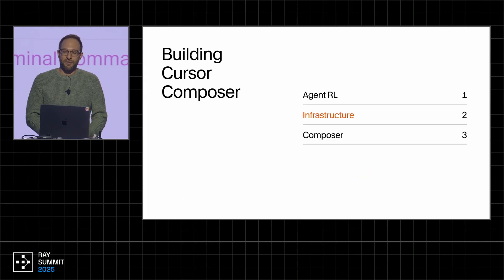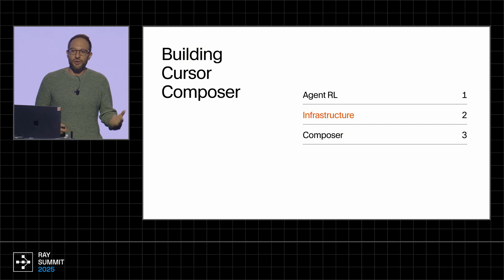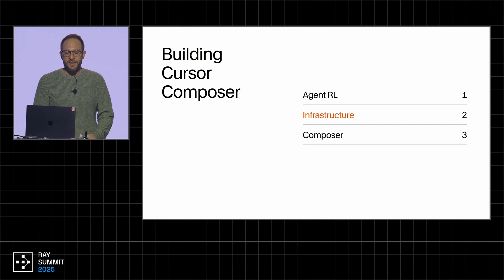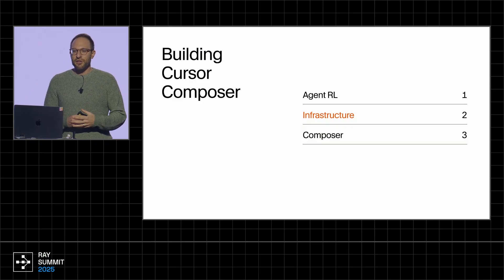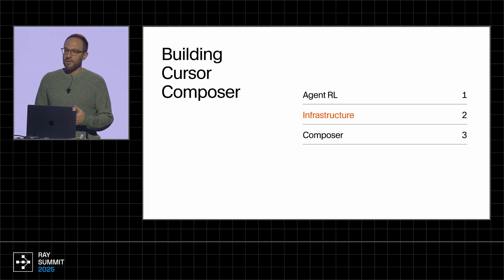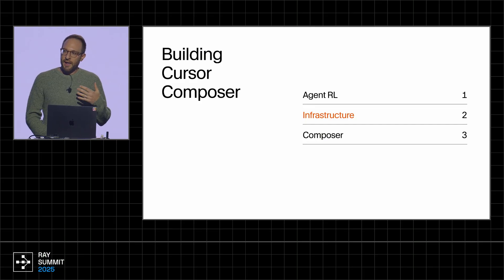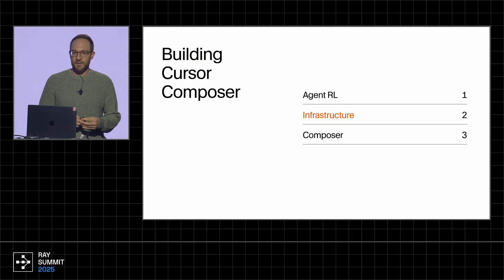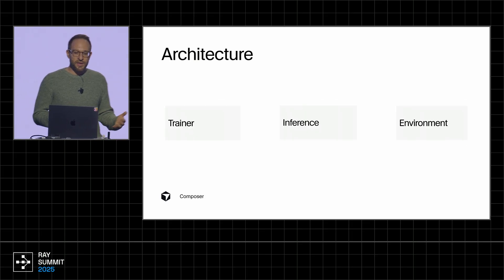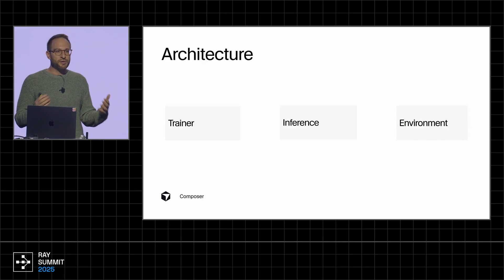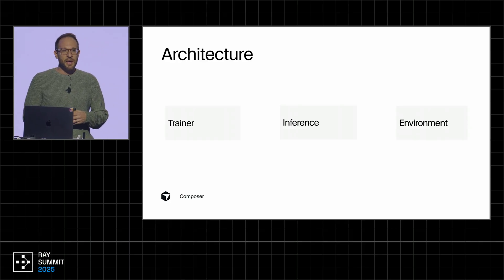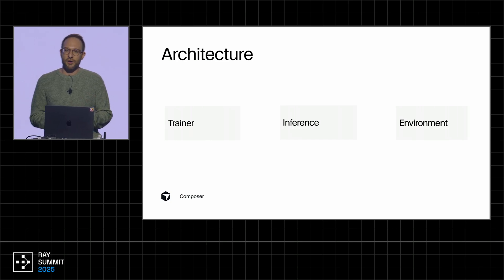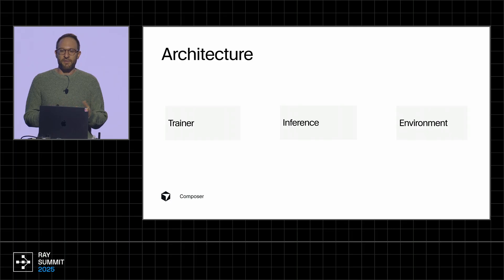All three of these problems reflect challenges in scaling the machine learning part of the system, but the actual solutions are all infrastructure choices. For this audience, I want to talk about some of the infrastructure decisions we made that were the enabling factor for training this model and releasing it in practice. The infrastructure we use probably doesn't look so different from other RL systems, but it's interesting to dive in and see the particular choices we made at Cursor to make them work better for our RL setup.